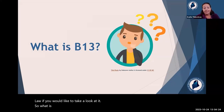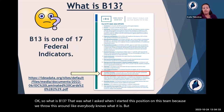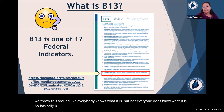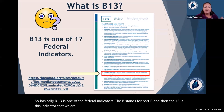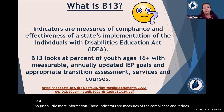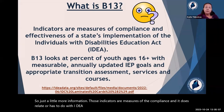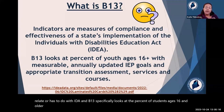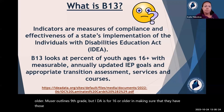So what is B13? Basically, B13 is one of the federal indicators. The B stands for Part B, and the 13 is this specific indicator — number 13 in the list from the federal DOE — that we are required to report on. Those indicators are measures of compliance related to IDEA. B13 specifically looks at the percent of students ages 16 and older. MUSER outlines ninth grade, but IDEA says 16 or older, making sure that they have compliant transition plans in place.